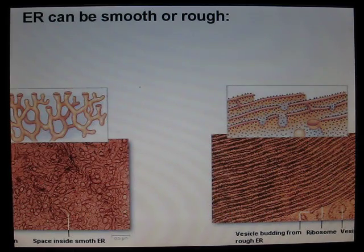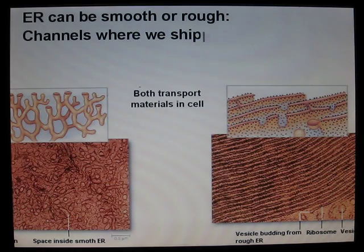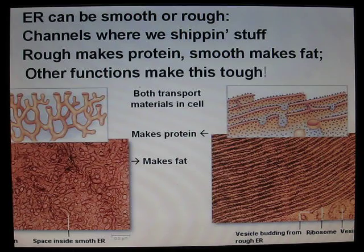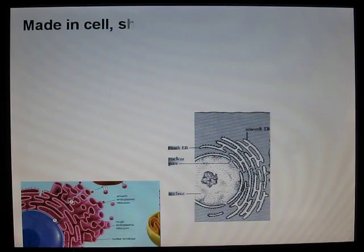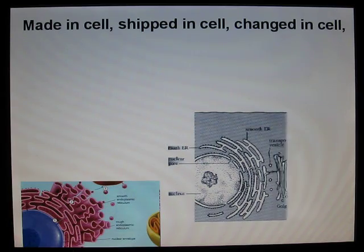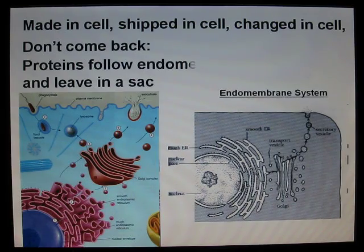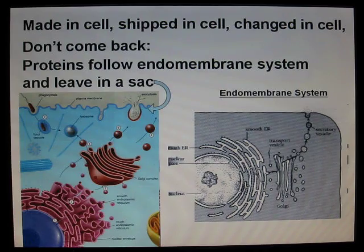We can also be smooth — rough channels where we ship and stuff. Rough makes protein, smooth makes fat and other functions. Made in cell, shipped in cell, changed in cell, don't come back — follow the endomembrane system, and leave in a sack.